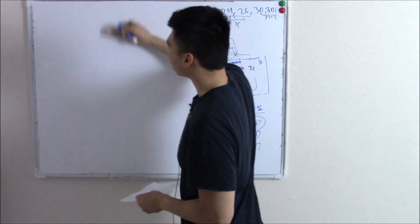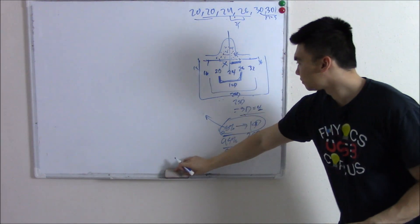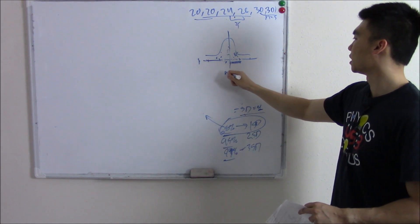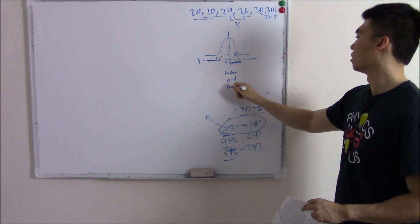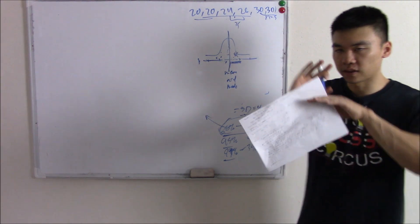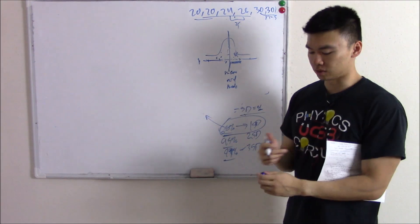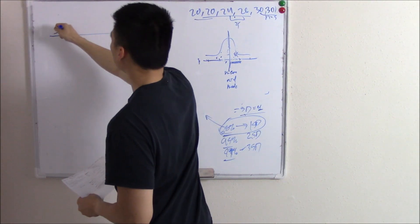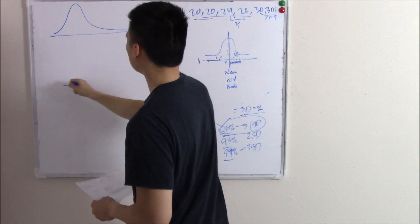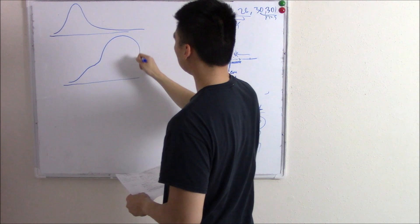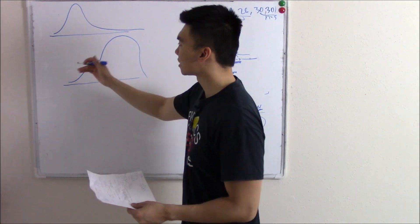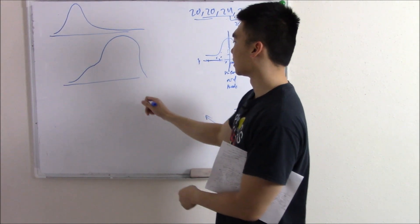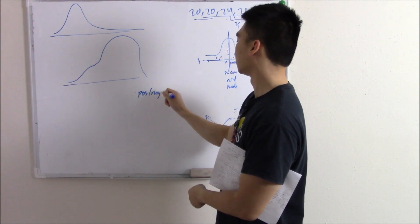Our last topic is positively and negatively skewed bell curves. In a perfect bell curve, mean, median, and mode are all the same number, giving a perfectly symmetrical curve. In real life, mean, median, and mode almost never equal the same number, so instead of a perfect bell curve we have curves that are skewed — not symmetrical.